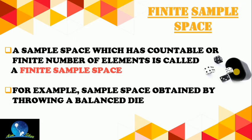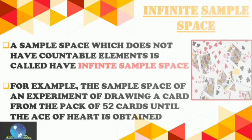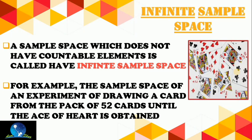There are two types of sample space: finite and infinite. A sample space which has a countable or finite number of elements is called a finite sample space. Finite means numbers we can count. For example, the sample space obtained by throwing a balanced die has six possibilities — we can count them — so it is a finite sample space.